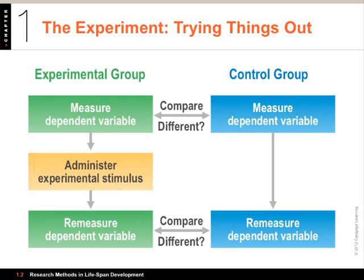It's also important that the researcher assign people to conditions, because if people get to choose, you end up with different kinds of people in different groups, giving you several possible reasons why the groups differ. There is also a third approach — not on the slides — that combines correlational data with methodological and statistical adjustments to try to get the same kind of conclusion as an experiment. These are called quasi-experimental methods, and it's an active field of research.